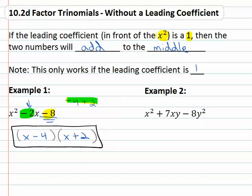It makes factoring a little quicker when that leading coefficient is a one. So with the second example, we've got x squared plus 7xy minus 8y squared. We know the x times x is x. To get the y squared, we're going to need some y's.